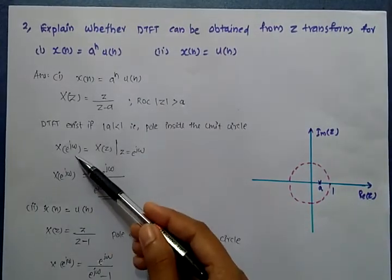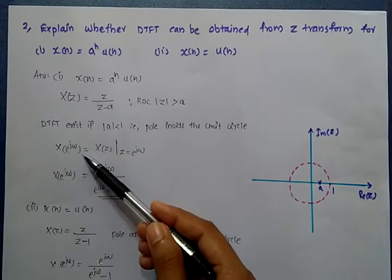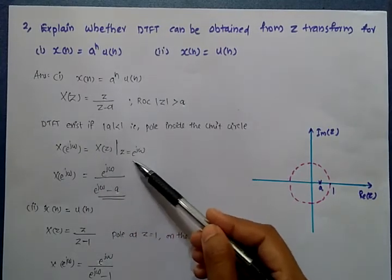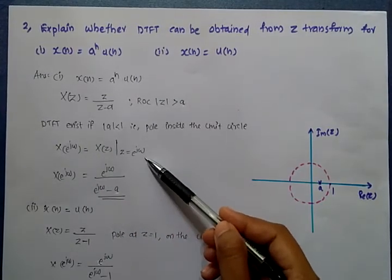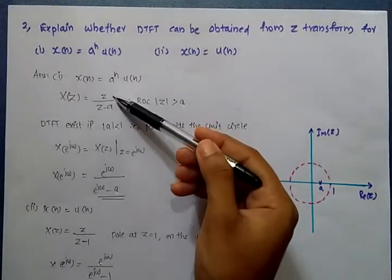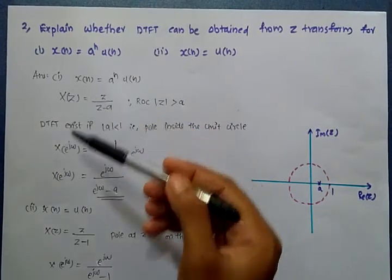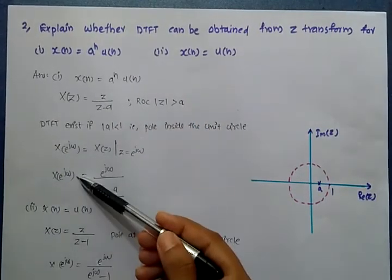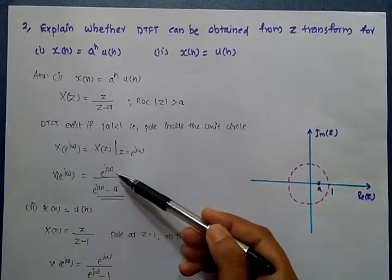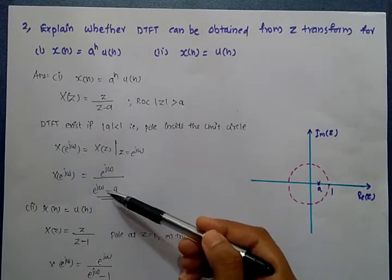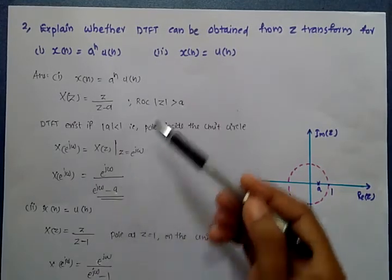When the ROC includes the unit circle, we substitute Z = e^{j omega} into X(Z) to obtain the DTFT: X(e^{j omega}) = e^{j omega} divided by (e^{j omega} minus a).